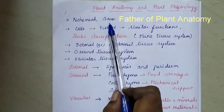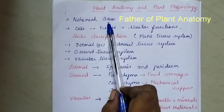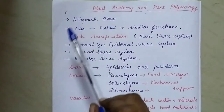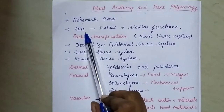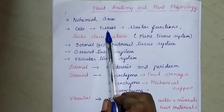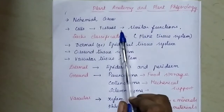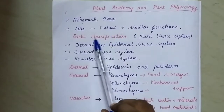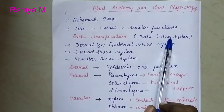He is an English plant anatomist and is known as the father of plant anatomy. A group of cells join together and it will form tissues. A group of tissues perform similar functions. All the organisms are made up of tissues. SAC classifies the plant tissue system into three main types.